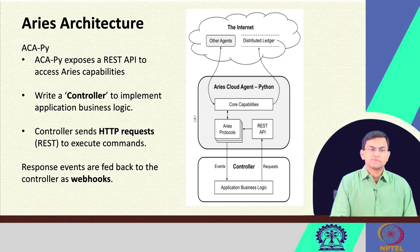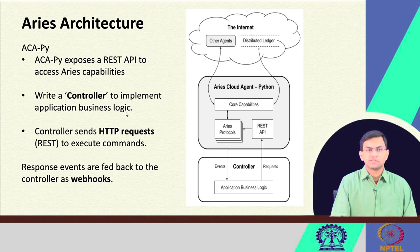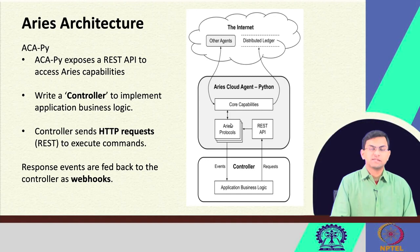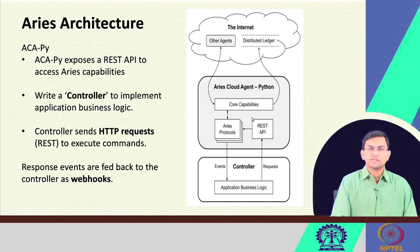To write applications using this Aries Cloud Agent, we have the REST API module. ACA-PY exposes a REST API to access its core capabilities. We have to write a controller to implement the business logic of our application. When developing an application, we need not change the Aries Cloud Agent; rather, we write a controller that uses HTTP requests — specifically REST APIs — to execute certain commands in the Aries Cloud Agent. When there are events, those events can be communicated back to the controller with the help of webhooks.